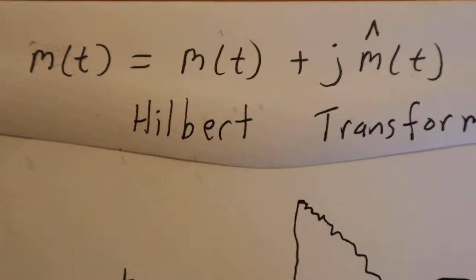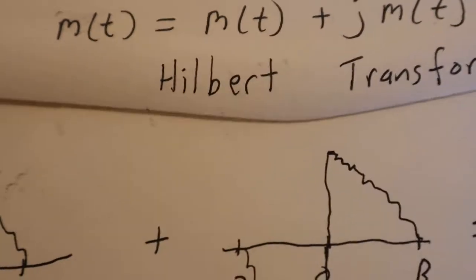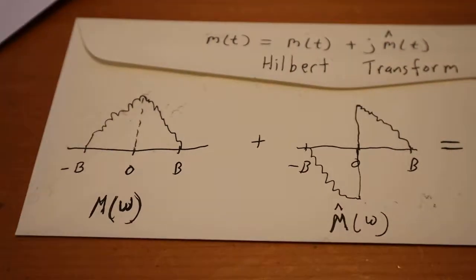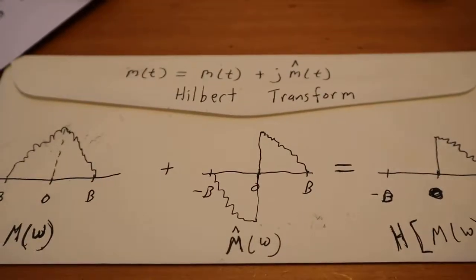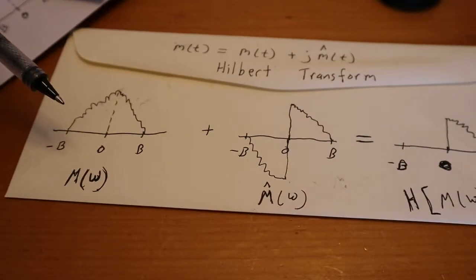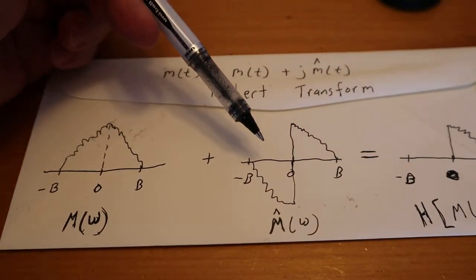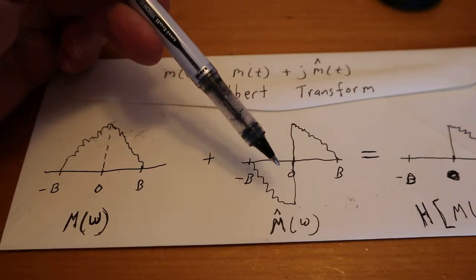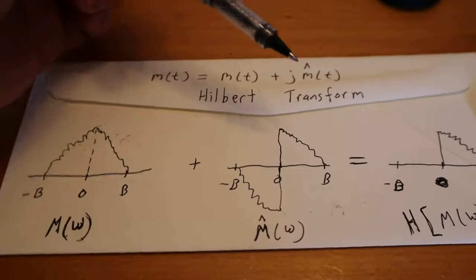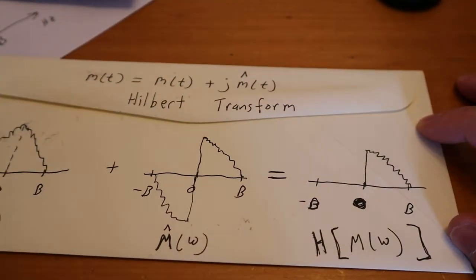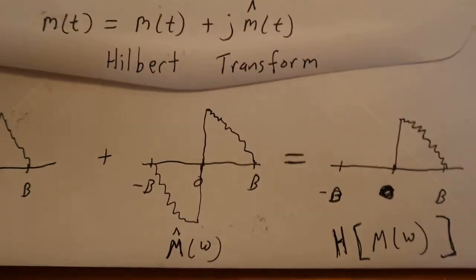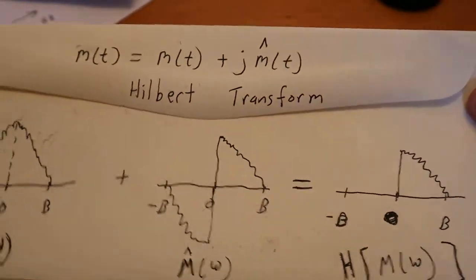We call that the Hilbert Transform in honor of the mathematician Hilbert. Now, if we look at this as a big picture, we can kind of see how this all comes into effect. Essentially we got here your M of Omega, and you're adding this guy, and you did this weird thing here where the negative frequency has been negative. And when you add these two, this guy and this guy cancel, and what you're left with is that. And that, that right there, ladies and gentlemen, is the mathematical trick to get just the bandwidth I need, which is right there.